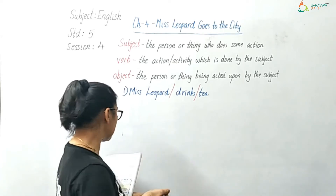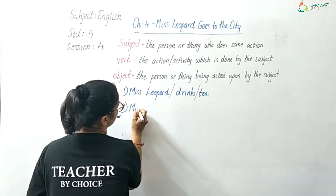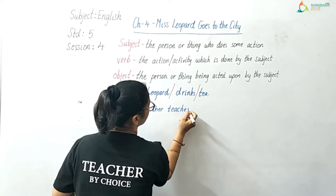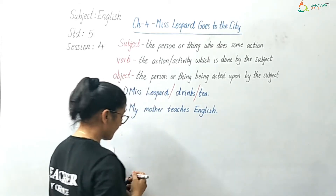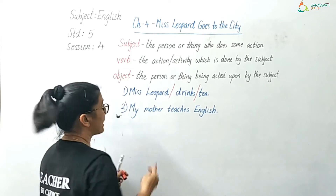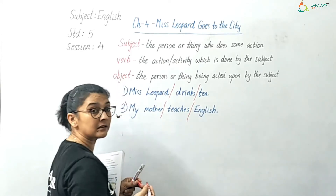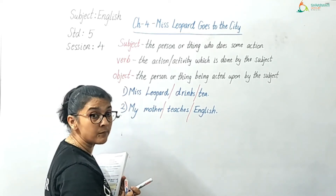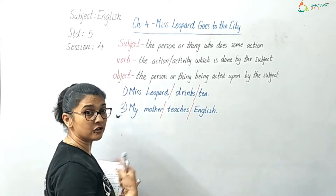Let us go to the second sentence: My mother teaches English. Who is doing the action? My mother. My mother is doing the action of teaching. So 'my mother' is the subject. 'Teaches' is the verb because that is the action. And 'English' is the object.